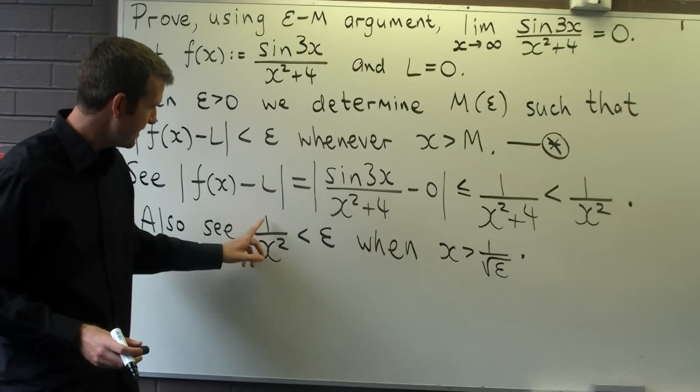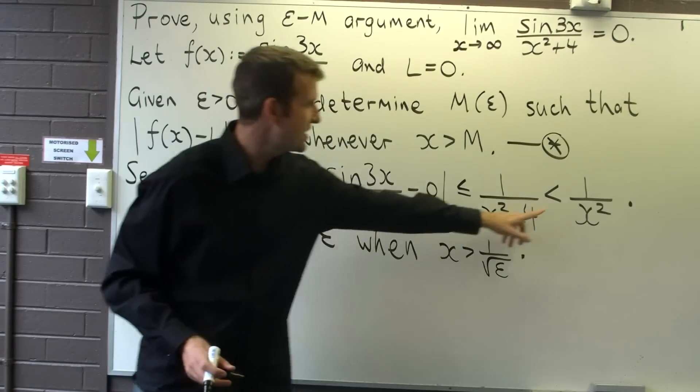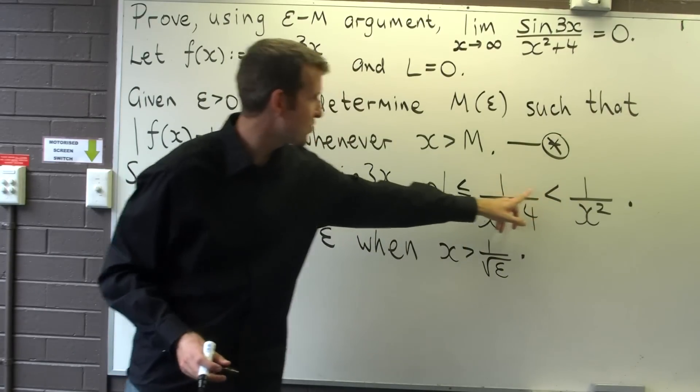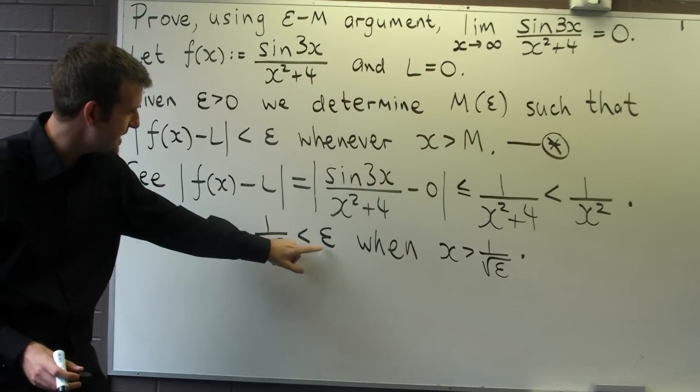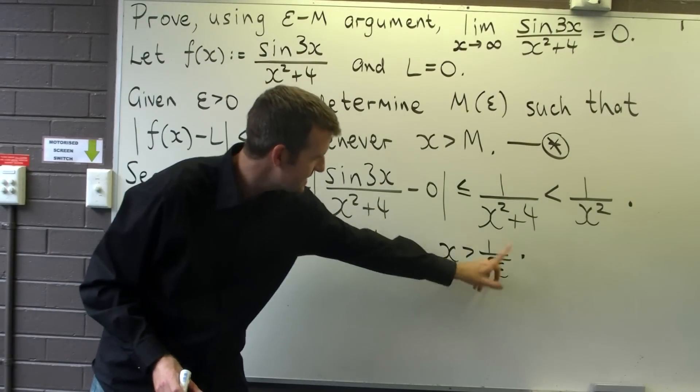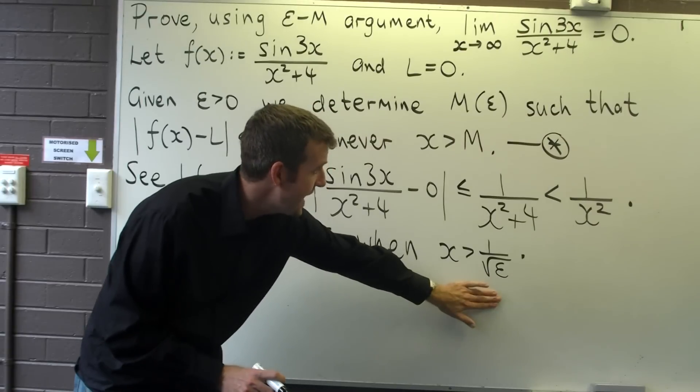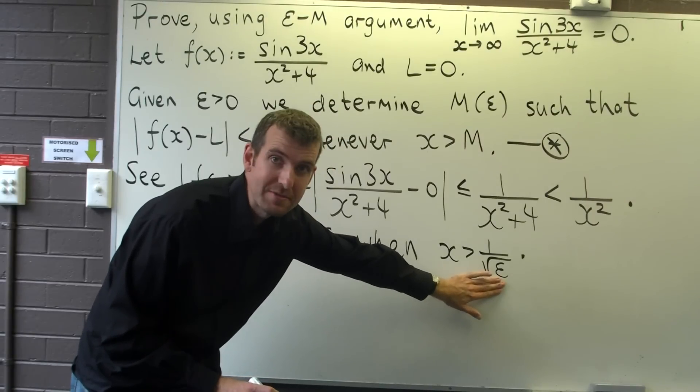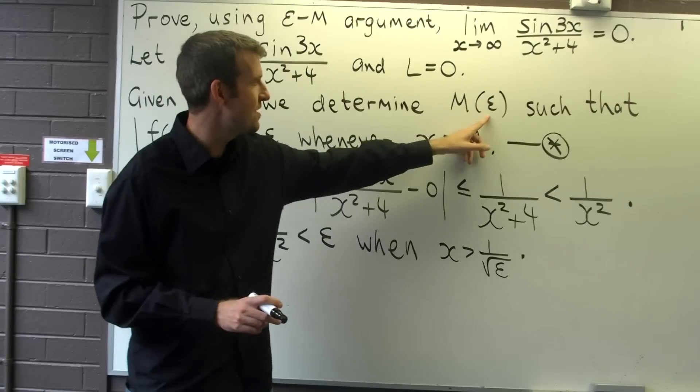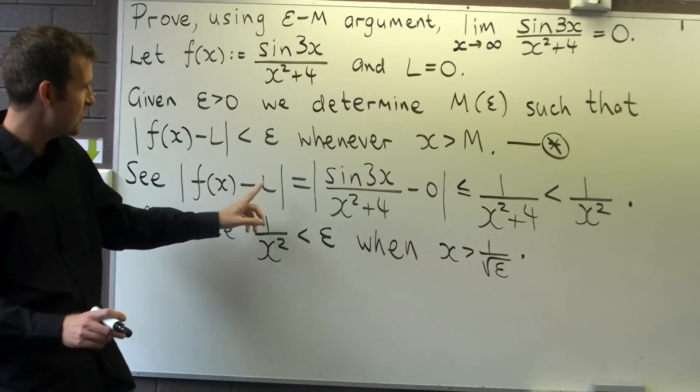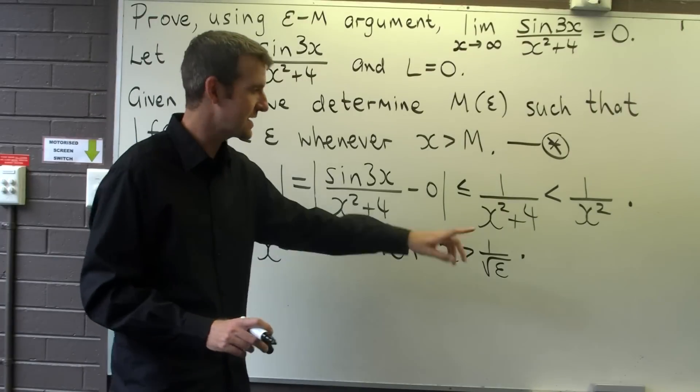How does that help us? Well, if 1/x² is less than epsilon for these values of x, and I know that 1/x² is greater than this minus this, then surely this has got to be less than epsilon when x is bigger than 1/√ε. So our choice here for M is 1/√ε, so we've found what we're looking for. We've determined an M(ε) given by this such that |f - L| is less than any given epsilon when x is larger than M.